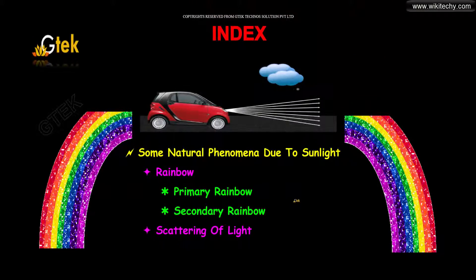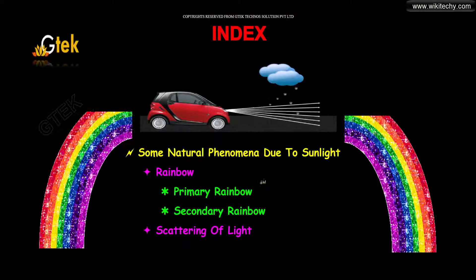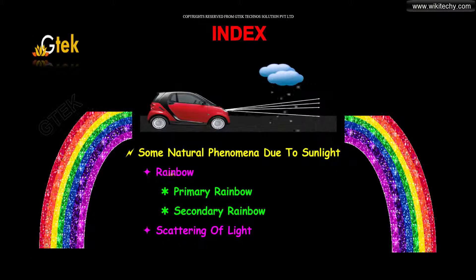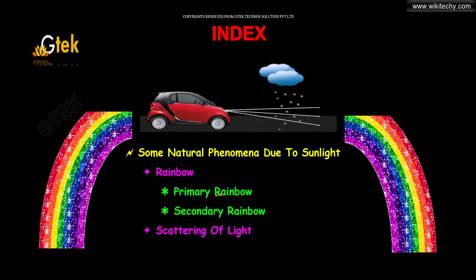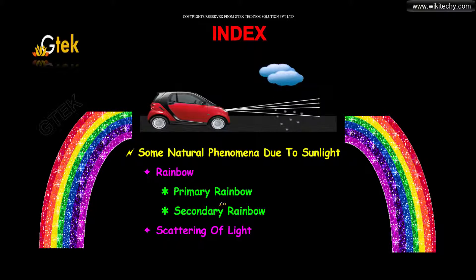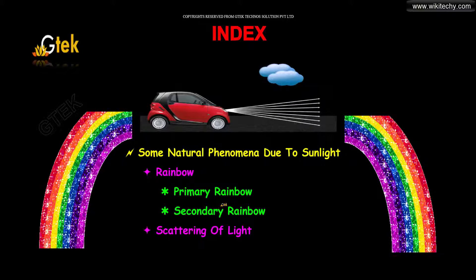Here is the index. I am going to talk about the rainbow — what is primary rainbow and secondary rainbow, and about the scattering of light.